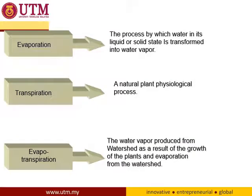To recap: evaporation is the process by which water in its liquid or solid state is transformed into water vapor. Transpiration is a natural plant physiological process. Evapotranspiration is the combination of those two — water vapor produced from watershed growth of plants and evaporation from the watershed. Transpiration will be really significant, especially when there is a large area of plantations, and it will affect water losses.